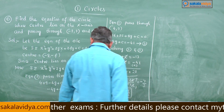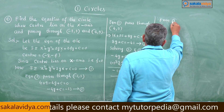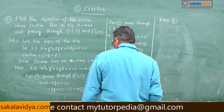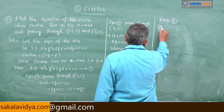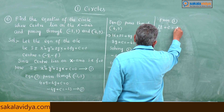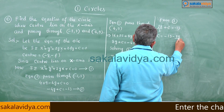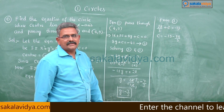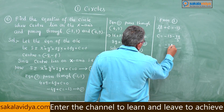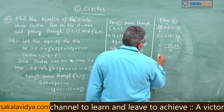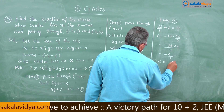Now, from equation 2, substituting g equals minus 7 by 3: minus 4 times minus 7 by 3 plus c equals minus 13, which gives plus 28 by 3 plus c equals minus 13. So c equals minus 13 minus 28 by 3. Taking LCM of 3, we get minus 39 minus 28 over 3, so c equals minus 67 by 3.